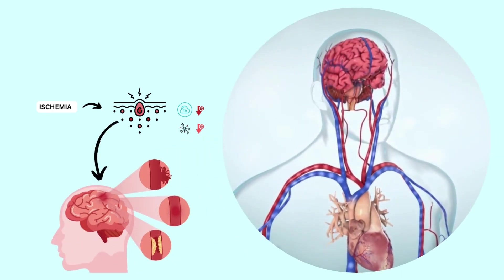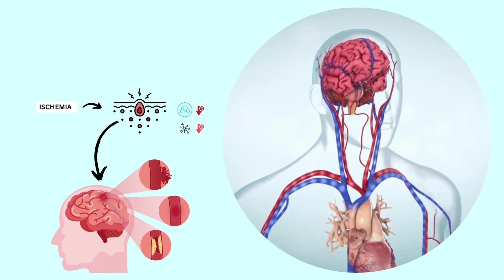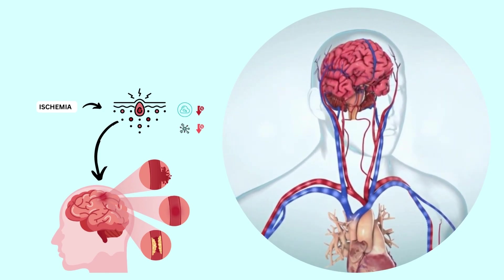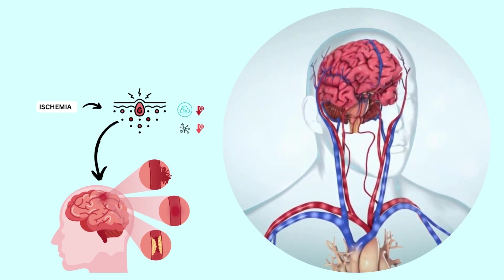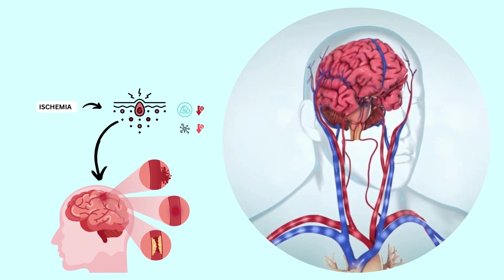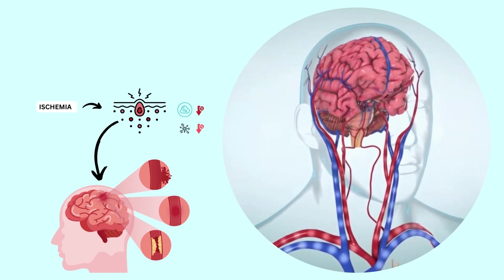Two internal carotid arteries anteriorly and two vertebral arteries posteriorly control blood flow to the brain, which is the circle of Willis.